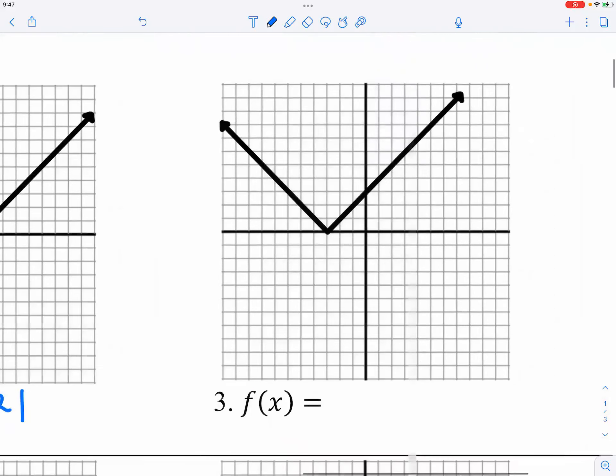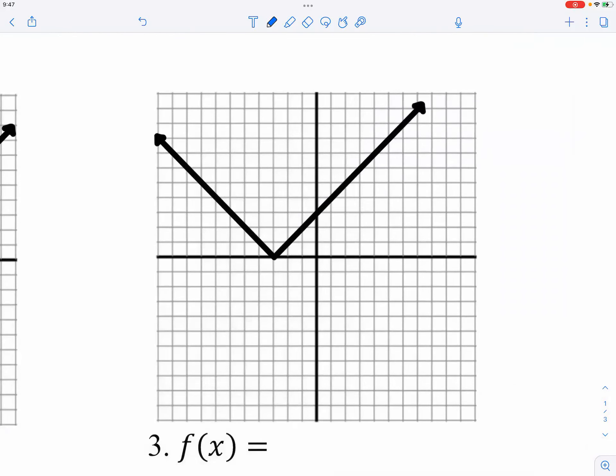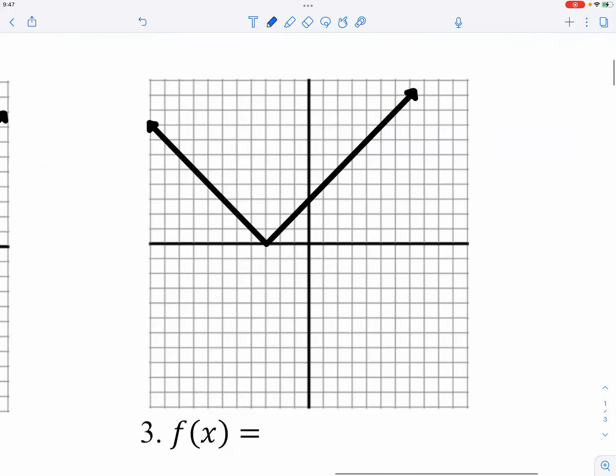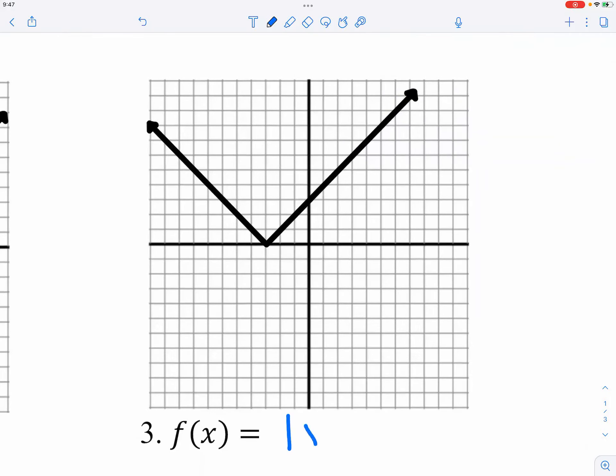Number three. It's moved to the left three units, so therefore the graph must be absolute value of x plus three, or x minus negative three, which ends up to be x plus three.